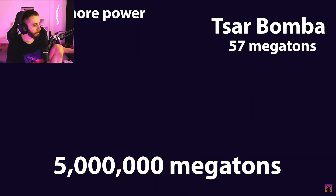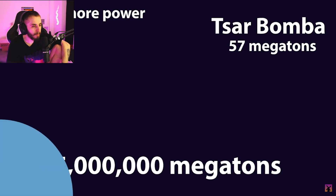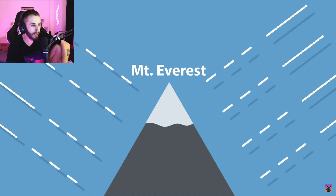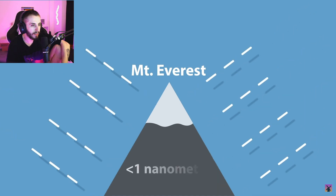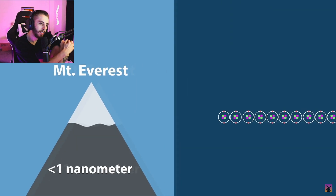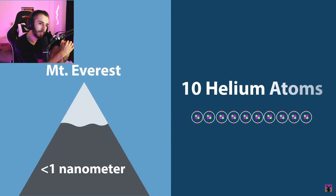That is 87,000 times more powerful than the largest nuclear bomb that humanity has ever detonated, and it would be enough to completely obliterate the entire planet. If you wanted to transform Mount Everest into a black hole, you would need to crush the entire mountain into a space smaller than a nanometer — which is just one billionth of a meter in length, or the size of 10 helium atoms placed side by side.